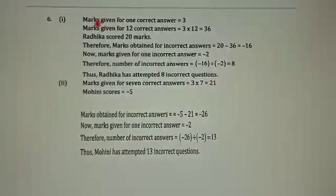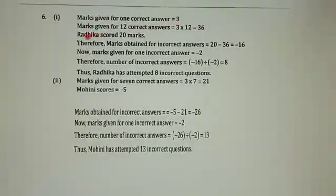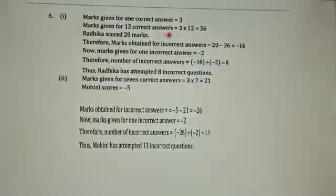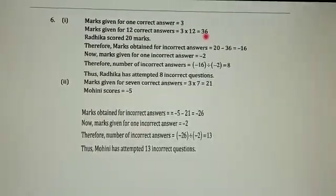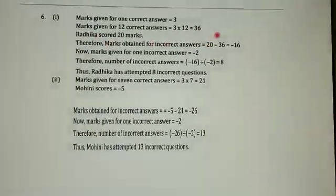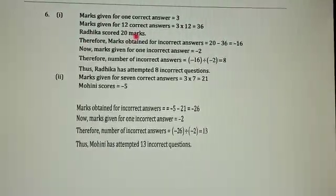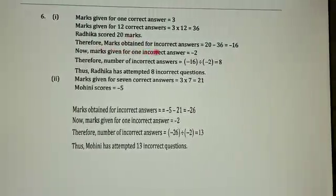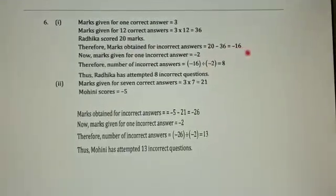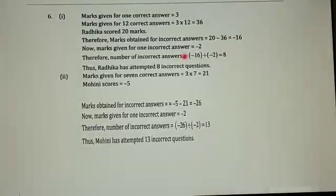Marks given for every correct answer is 3. Radhika has attempted 12 correct answers. So total score for 12 correct answers equals 3 multiplied by 12, which equals 36 marks. Radhika scored 36 marks for correct answers, but her total score is 20 marks. Therefore, marks obtained for incorrect answers equals 20 minus 36, which is minus 16 marks.